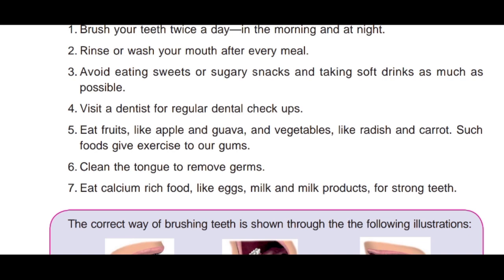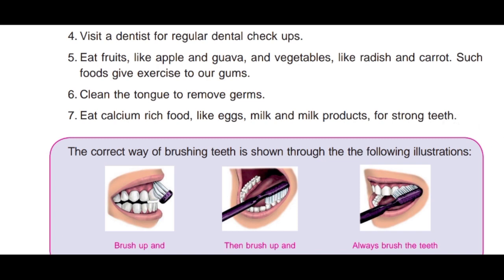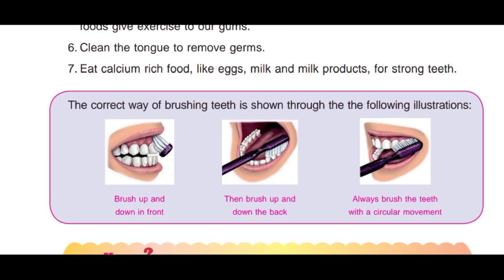Fourth, visit a dentist for regular dental check-ups. Fifth, eat fruits like apple and guava and vegetables like radish and carrot — such food gives exercise to our gums. Sixth, clean the tongue regularly to remove germs. Seventh, eat calcium-rich food like eggs, milk and milk products for strong teeth. Hamare daanton ko strong banaaye rakhne ke liye hume calcium rich food khaana chahiye.